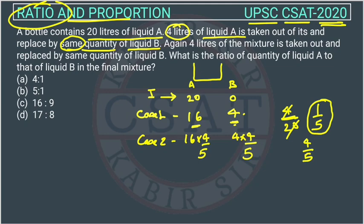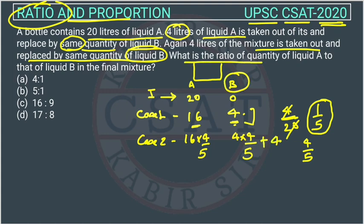Now what is mixture is taken out? Mixture is taken out and replaced by same quantity of liquid B. So 4 liters of mixture is taken from this and 4 liters liquid B is added. So we will add 4 in this. So what is the ratio of quantity of liquid A to that of liquid B? So now we have to solve this.